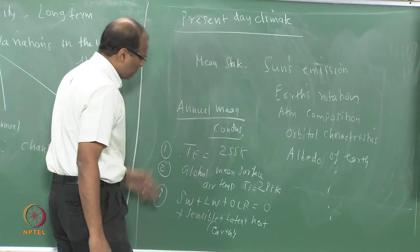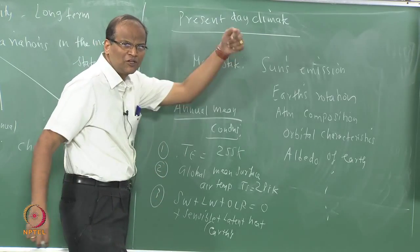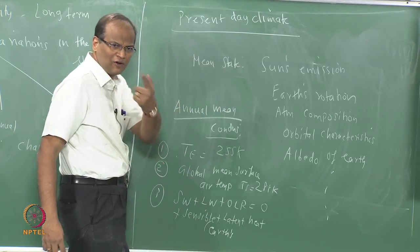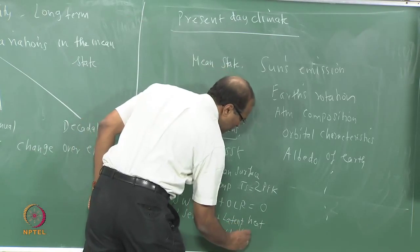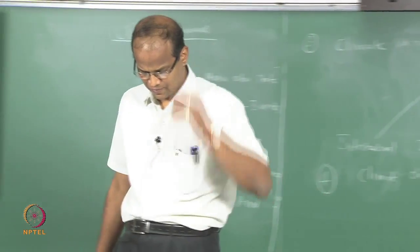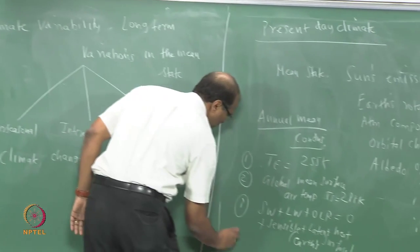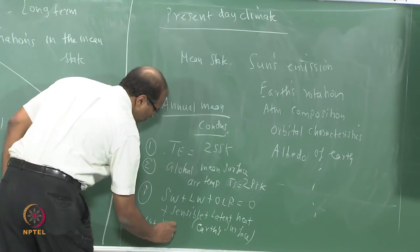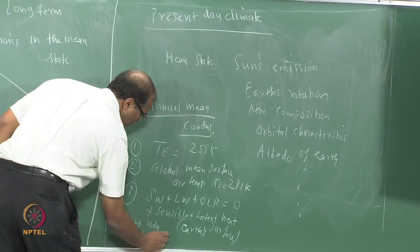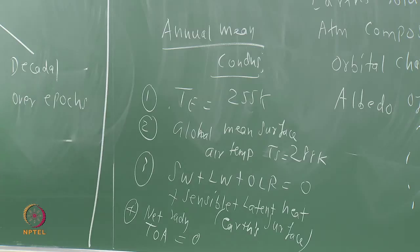The algebraic sum of the short wave radiation, long wave radiation, outgoing long wave radiation, plus sensible and latent heat flux — all put together: 279 watts per meter square entering, 130 is evaporation and transpiration cooling. At the earth's surface the net is 0 — some equilibrium is maintained. The globally averaged net radiation at the top of the atmosphere is also equal to 0.